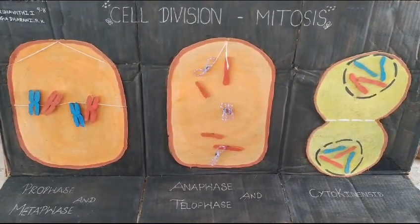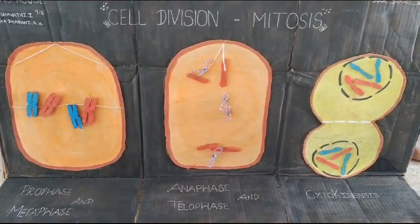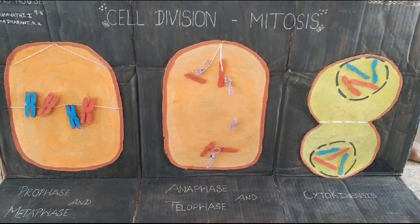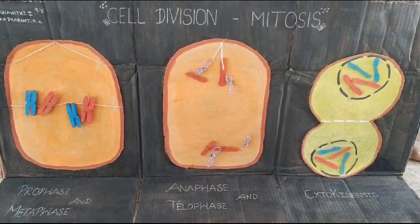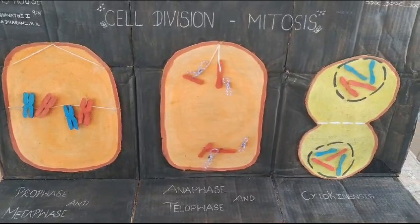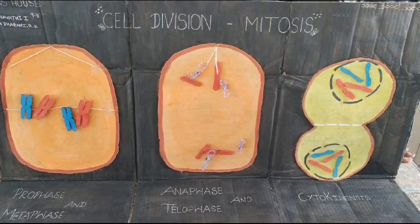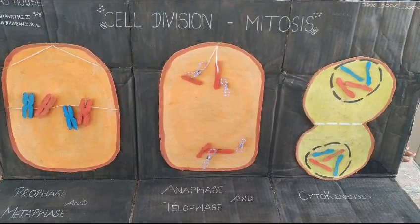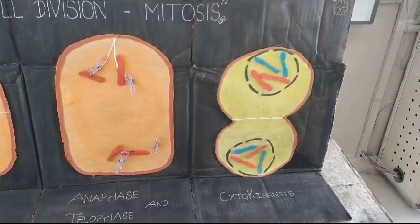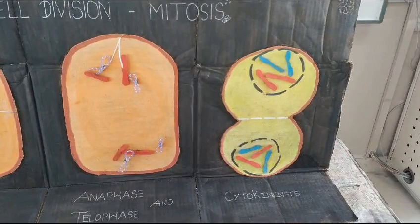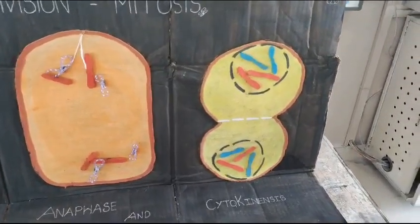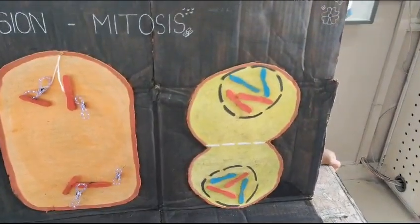Next, in telophase, these chromosomes without sister chromatids will move towards the poles and will be at the poles. And next, cytokinesis will occur. After these four phases and cytokinesis, the parent cell divides into two daughter cells with four chromosomes each.